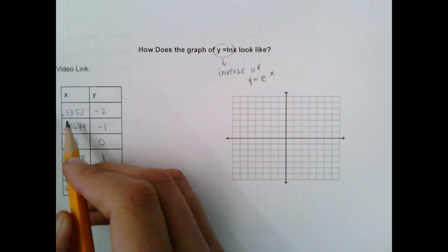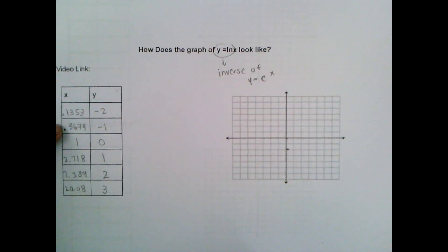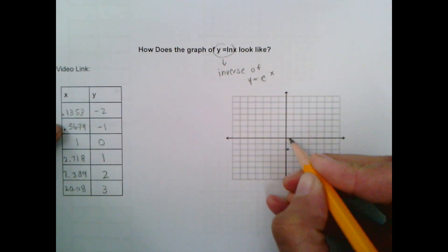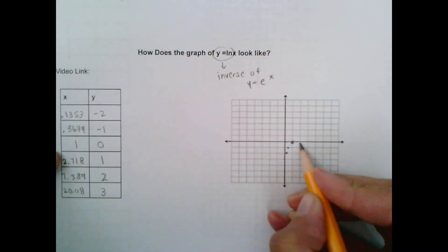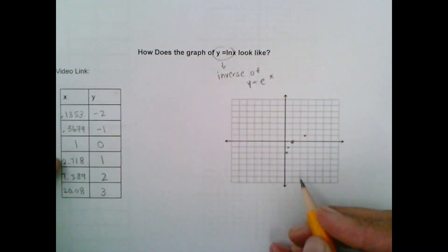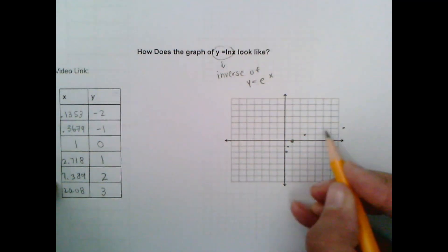Alright so when x is 0.1353 we have that y is negative two. So when x is very close to zero we have that the y is negative two so I'm just going to put that very close there. When x is 0.3679 which is again less than halfway in here we get that the y is negative one. Okay when x is one my y is zero. When x is 2.718 that's around here my y is one and that's going to be right here. When x is 7.389, 7.389 that's like right here the x becomes two. And then when x is 20 point something which is somewhere down here we get that it's three.